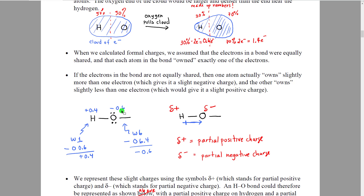These charges balance out because the overall molecule still has to be neutral. Therefore, we see that this bond is no longer neutral — it has a positive 0.4 on one end and a negative 0.4 on the other end.